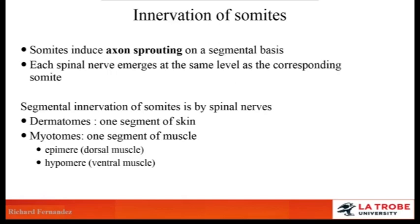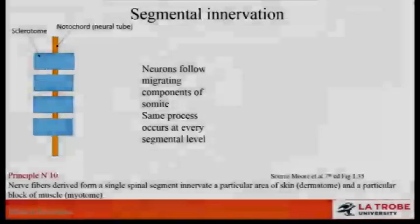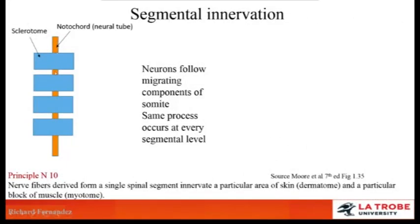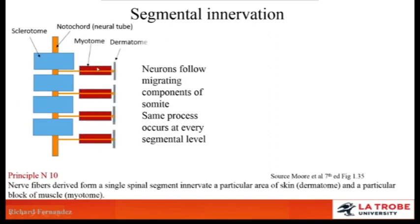This is a key point to understand before progressing further. On the diagram, you can see the notochord, which develops into the neural tube and spinal cord, with the sclerotome forming the vertebral bodies around it. Think of the dermomyotome as a marshmallow — as it puffs up and expands, the axons that sprout out get dragged with it. You'll notice the axon sprouting out, the myotome and dermatome developing, and that axon supplying that segment. This is repeated for each subsequent sprouting axon supplying each segment.